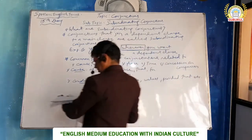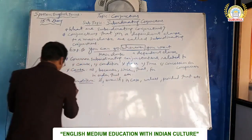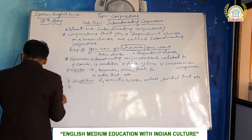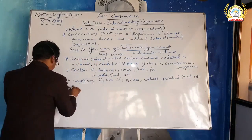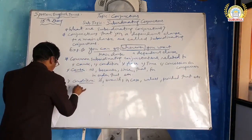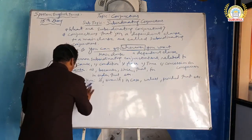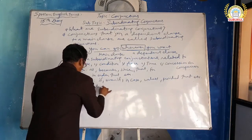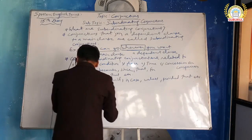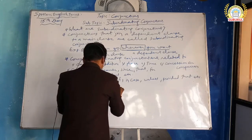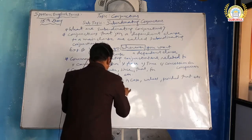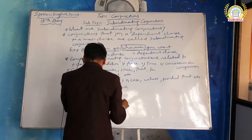Number three: place. Conjunctions in this category include: where, wherever.